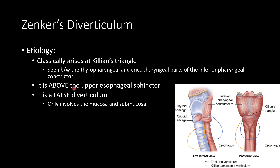Remember that this is above the upper esophageal sphincter, and this is going to be important when we talk about the symptoms associated with Zenker's Diverticulum — we'll come back to that in a minute. But remember that it is a false diverticulum, so it will only involve the mucosa and submucosa.